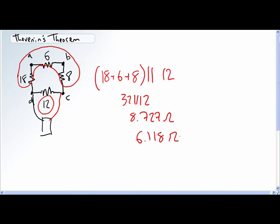So this is one of those situations where you've got to realize it depends upon your perspective. If you hook something up on this side, you're going to see a resistance of 6.118 ohms. But if you hook something up to this here, you're going to see a resistance of 8.727 ohms.